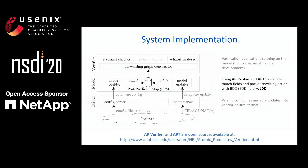Here is the system architecture for APKIP, which consists of three layers. The most important part is the model layer, where we read in the device configuration files to build a network model, and we update the model based on data plane updates like insertions or deletions of FIP rules or ACL rules. We encode the match fields and packet rewriting actions with Binary Decision Diagrams (BDD), using open source libraries from APVerifier and APT.